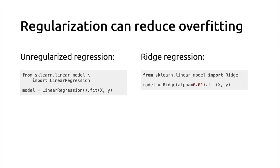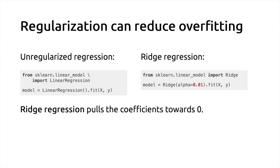The alternative is to use what we call ridge regression — the most popular alternative for introducing regularization for linear regression. In scikit-learn, the class is called Ridge. When you instantiate it, you have to pass a parameter alpha. There is a default value, but you should probably tune it, as this alpha parameter controls the strength of the regularization.